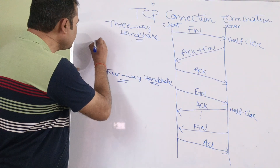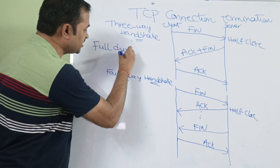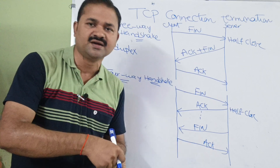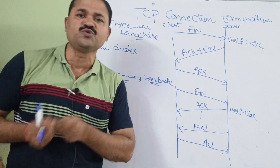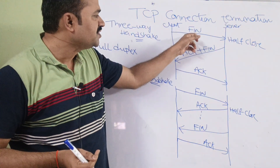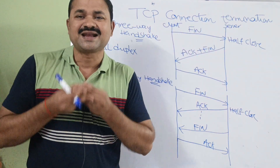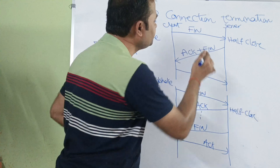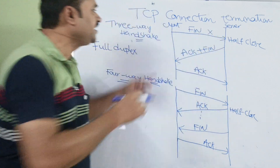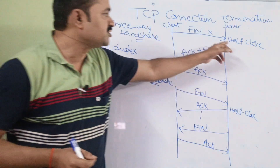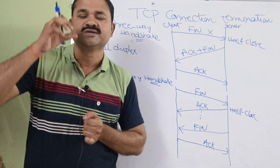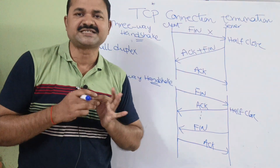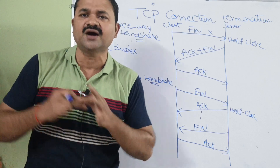TCP uses full duplex communication. Here the client is sending a FIN segment to the server, which specifies that the client wants to close its connection with the server. Whenever this segment is transmitted to the server, the connection from client to server will be terminated — this is called a half close. Half close specifies that the connection between client to server is closed.